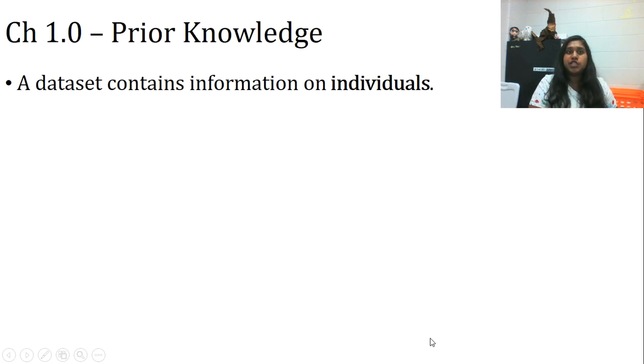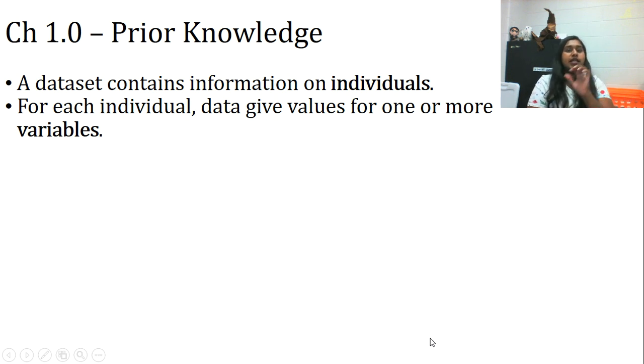Some prior knowledge that y'all should have come in with from elementary school probability and statistics, middle school, and potentially algebra one or algebra two. A data set contains information on the individual. Most of us are picking up on this process—what is the individual—but where I see confusion is that some of us are taking the individual and including it as a variable. Please remember there is a difference between your individual and your variable.